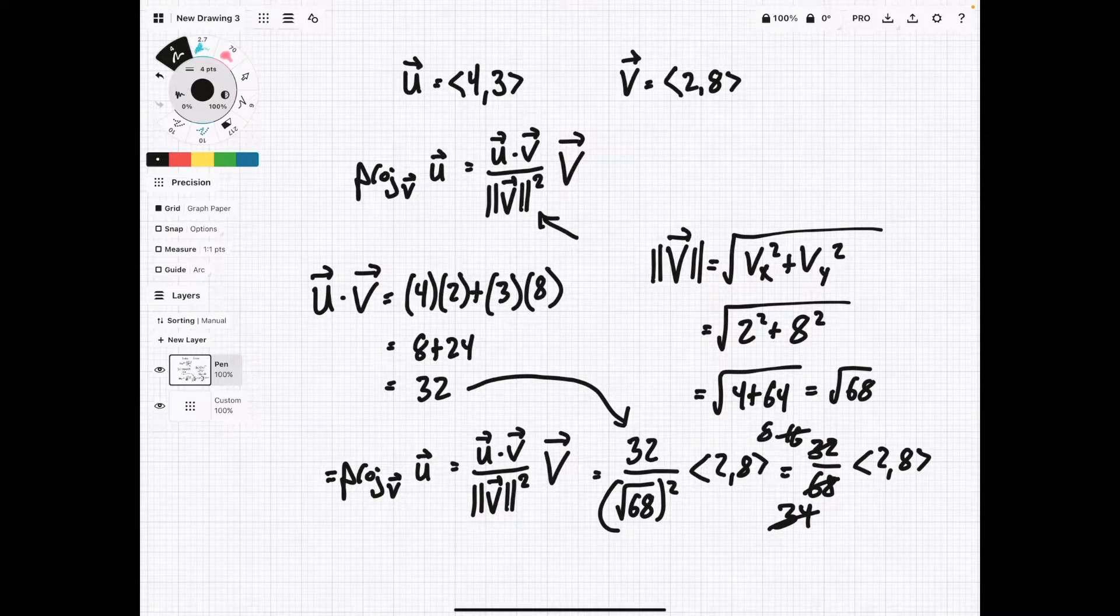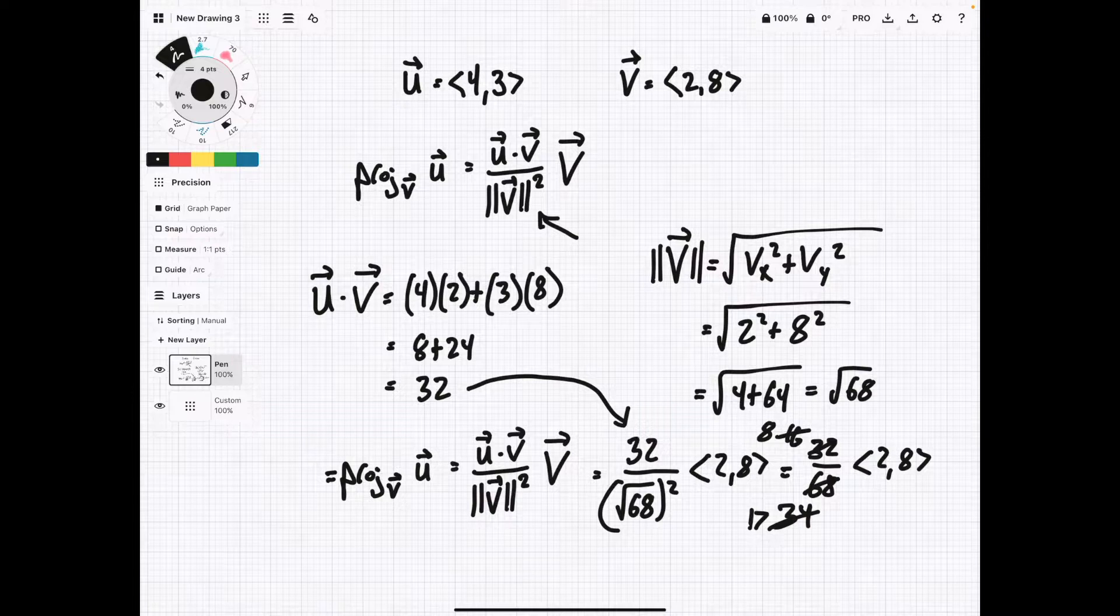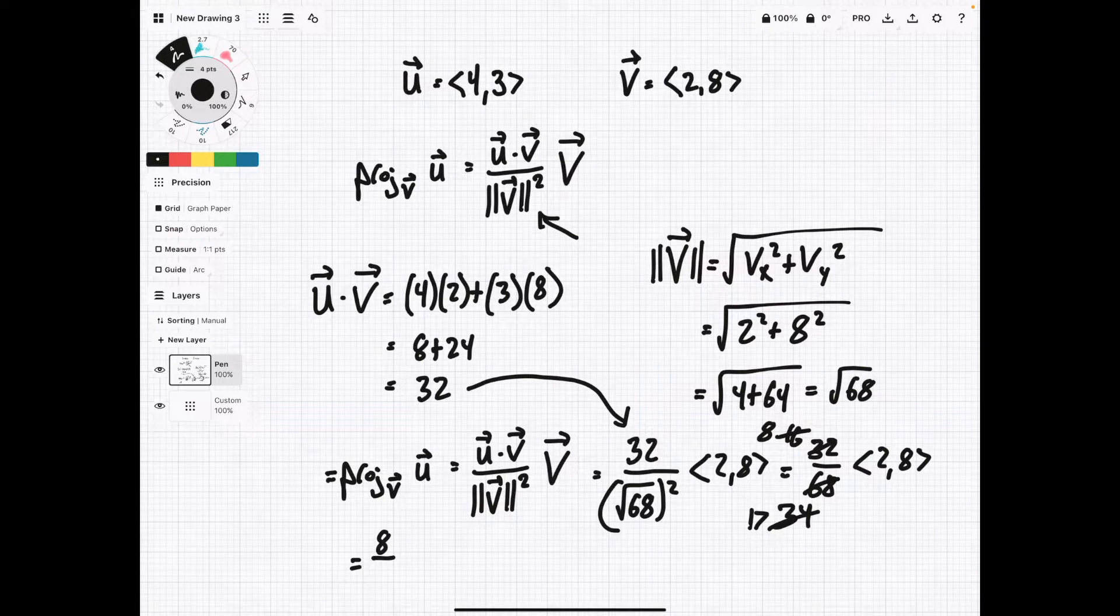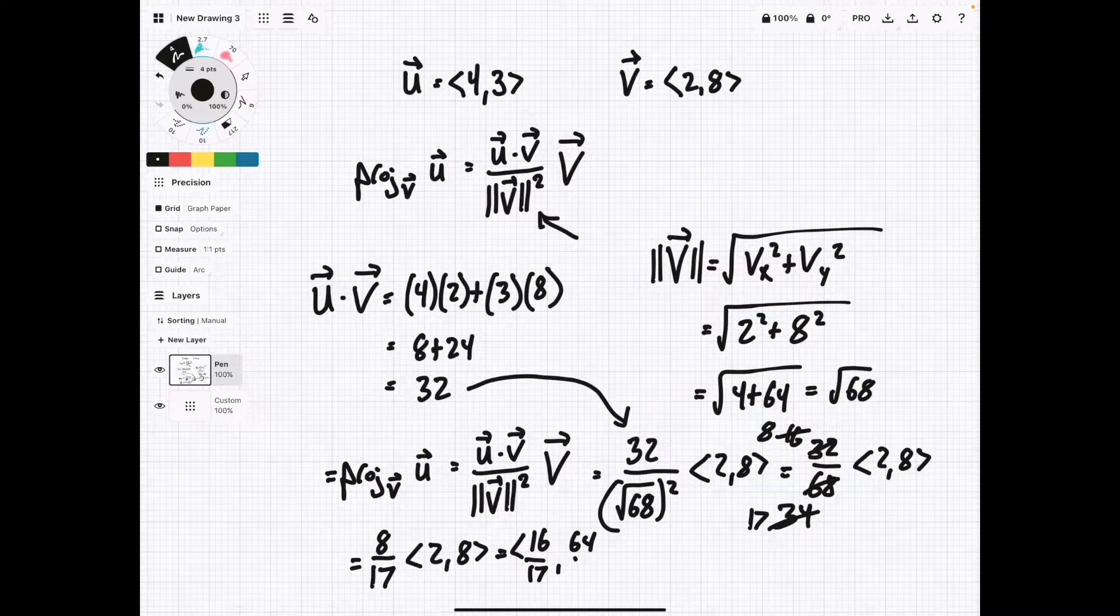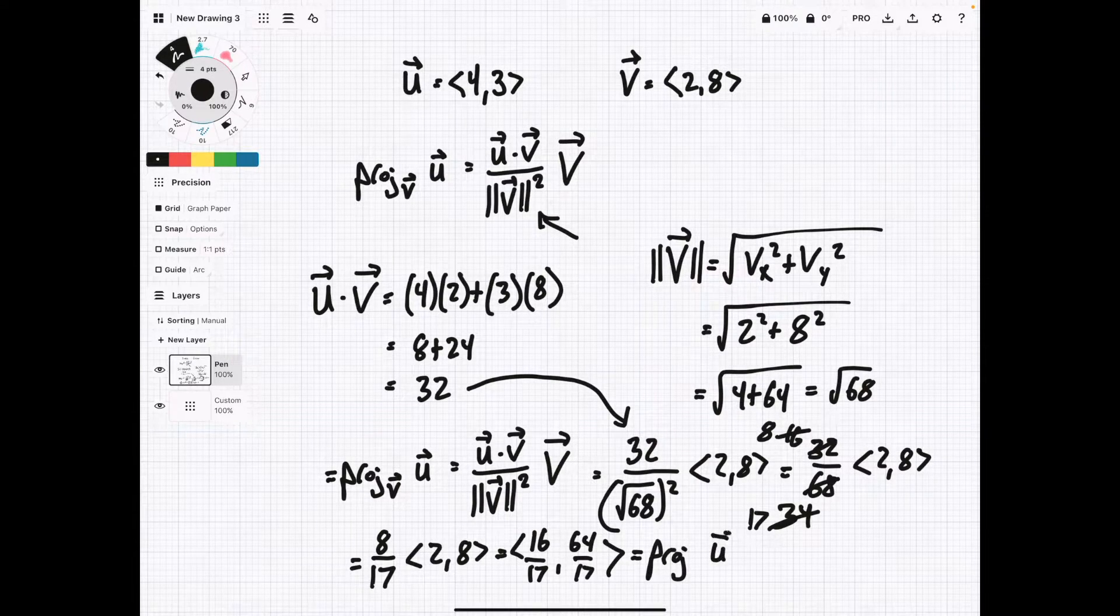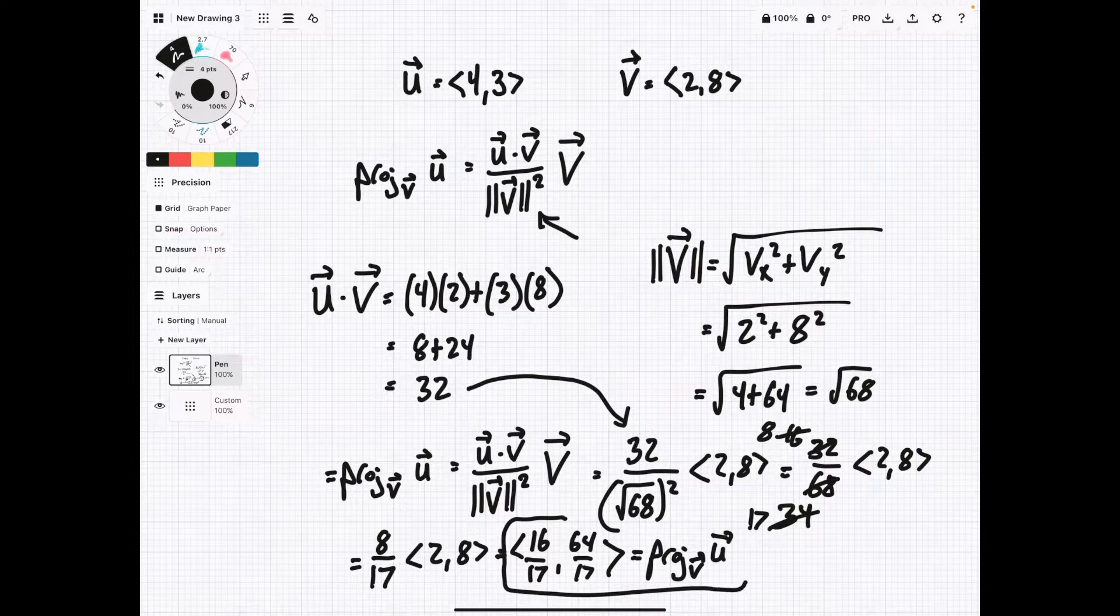We can pull another 2 out, so this becomes 8, and this becomes 17. And so now if we rewrite it down here, simplified, we're going to have 8 over 17 times 2 comma 8. And then we multiply this out, it's going to be 16 over 17, and 64 over 17. So this is our new projected vector, the projection of u onto v. So getting a little crammed down at the bottom here, but there is our answer.